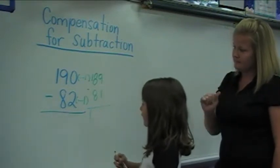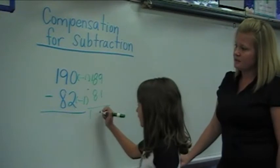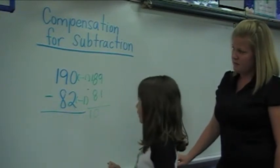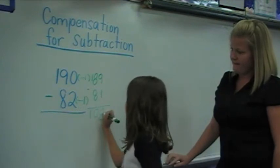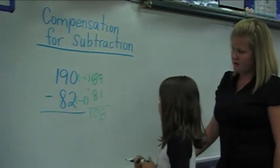Eighty minus eighty is zero, and nine minus one is eight. So that equals one hundred and eight.